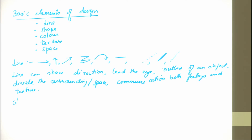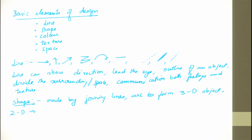When we talk about shape, shapes are basically extensions of these lines. Shapes are made by joining lines and arcs to form 2D or 3D objects. These can be a circle, square, triangle, or any free-form surface — whatever you create in 2D can be extended to 3D to identify a shape.